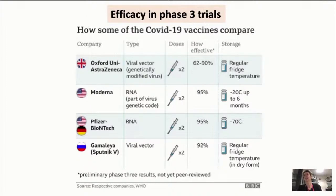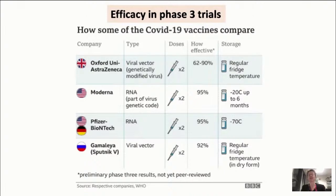To conclude: the phase three efficacy results, as released by press conference, show the Oxford ChAdOx1 COVID-19 vaccine at 62-90% efficacy, Moderna at 95%, Pfizer at 95% — very good results — and Sputnik V at 92%. Regarding storage, the mRNA vaccines still require freezing rather than just refrigeration. That is a meaningful difference for global distribution. These are really fantastic results across all platforms.